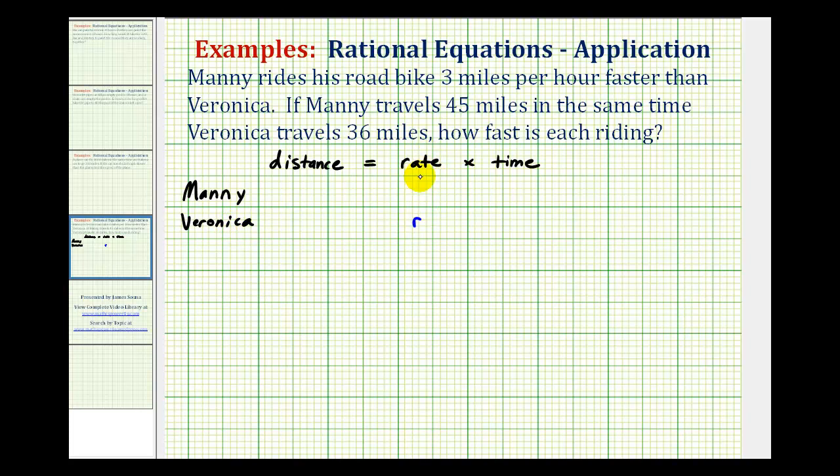then to show the relationship that Manny rides three miles per hour faster, we'll use the expression r plus three for Manny's rate.